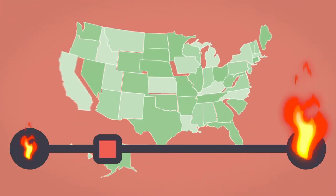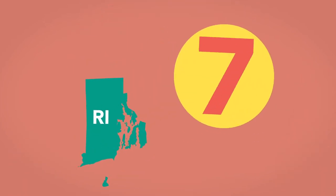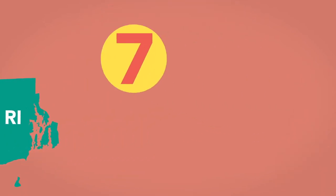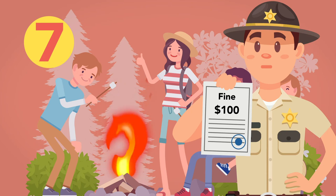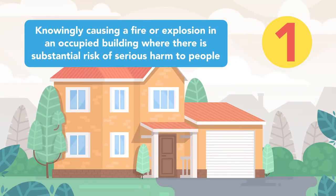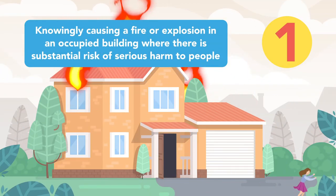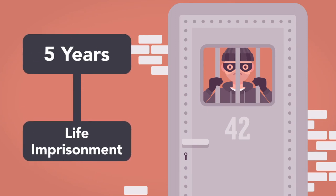Some states apply a wide range of arson degrees based on the circumstances. For example, in Rhode Island, there are seven degrees of arson. They range from seventh-degree arson, which means making an unauthorized bonfire and is punishable by a $100 fine, up to first-degree arson, which is knowingly causing a fire or explosion in an occupied building where there is a substantial risk of serious harm to people and is punishable by anywhere from five years in prison to life imprisonment.